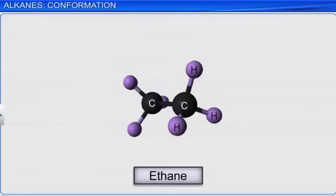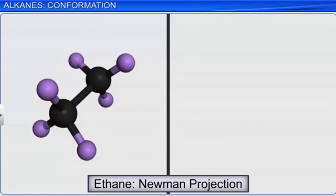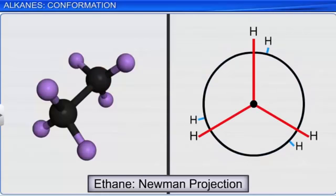In Newman projection, the carbon-to-carbon bond conformation is viewed head-on, that is, front to back. The carbon atom at the front is represented as a dot, and the carbon atom at the back is represented as a circle. The hydrogen atoms attached to the carbon atoms are shown by lines, and the bond angle between these lines is kept at 120 degrees. The hydrogen atoms connected to the carbon atom in the front are represented by longer lines, and those connected to the carbon atom at the back are represented by shorter lines.